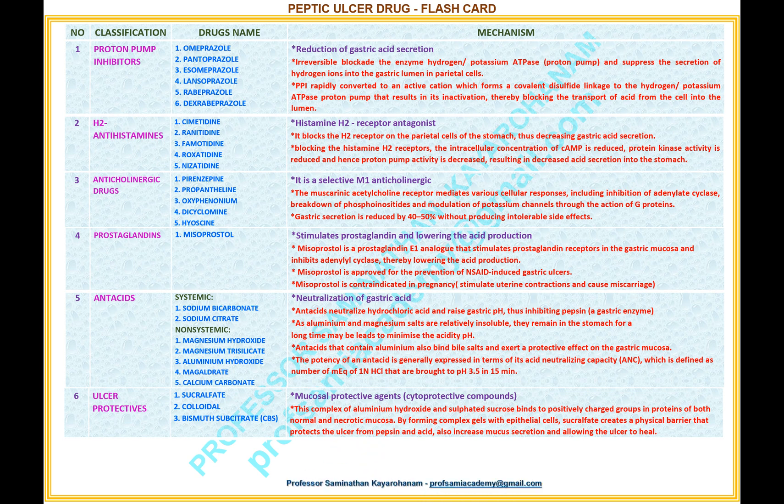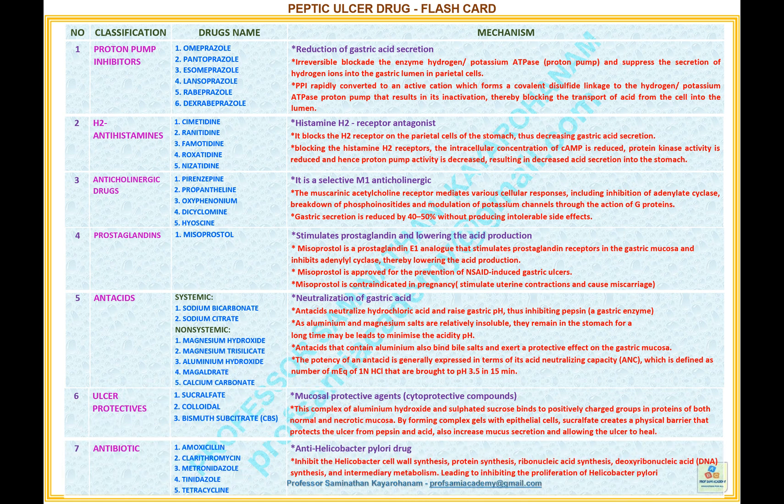Number 7. Name of the classification: Antibiotics. Drugs under this classification: 1. Amoxicillin, 2. Clarithromycin, 3. Metronidazole, 4. Tinidazole, 5. Tetracycline. Mechanism: anti-Helicobacter pylori drugs. Detailed mechanism: these drugs inhibit the Helicobacter pylori cell wall synthesis, protein synthesis, ribonucleic acid synthesis, DNA synthesis, and intermediary metabolism.